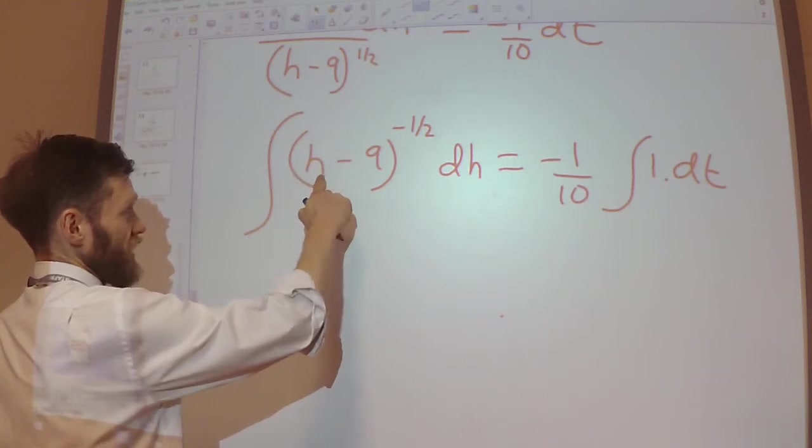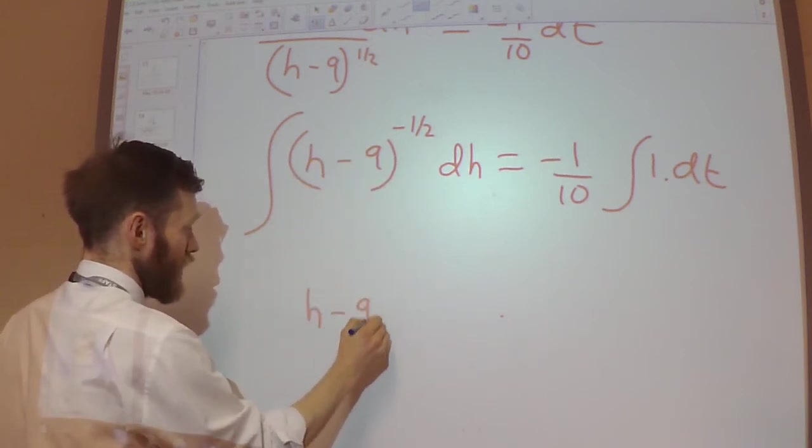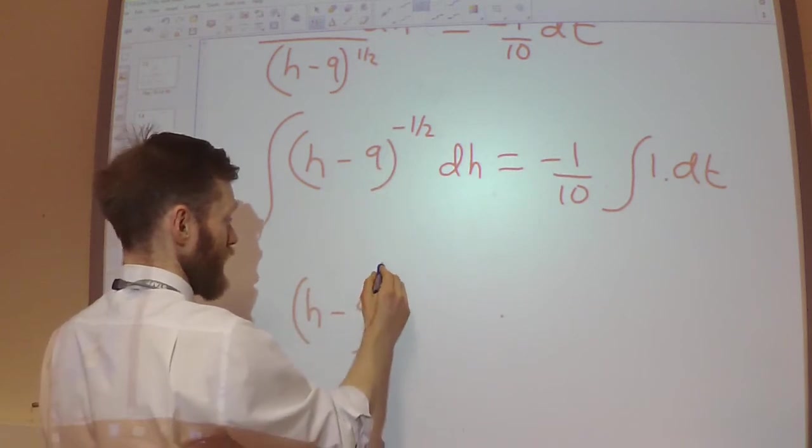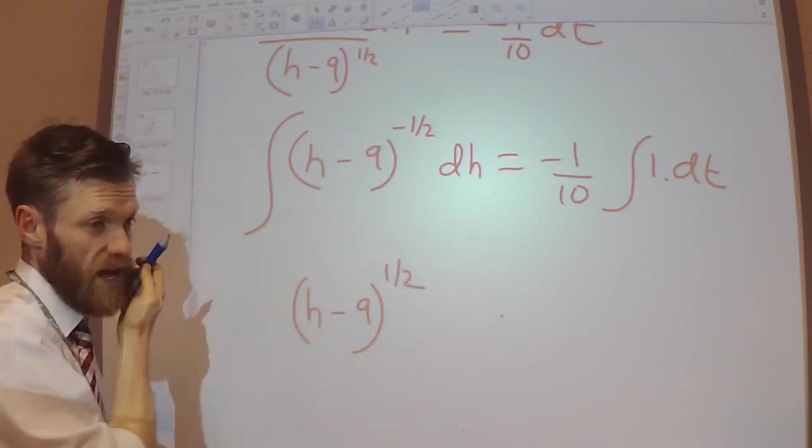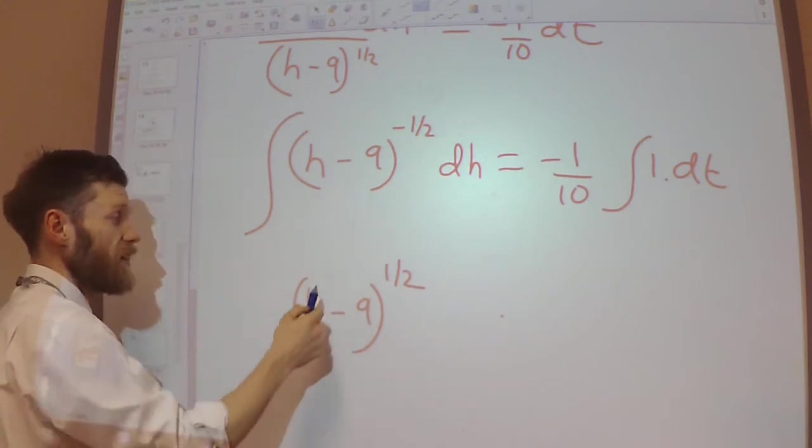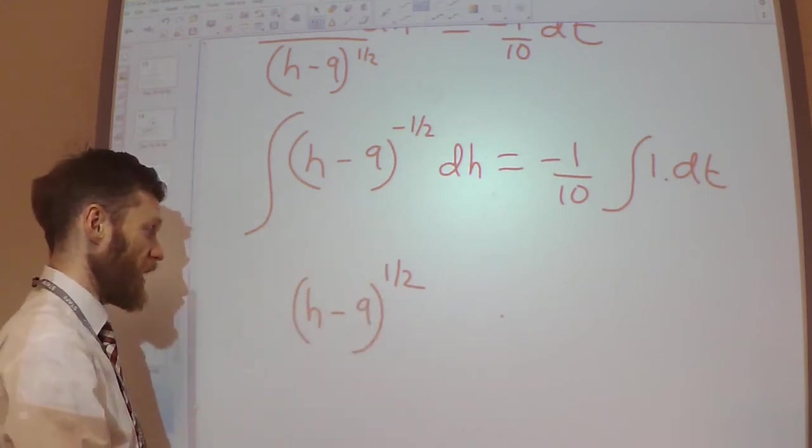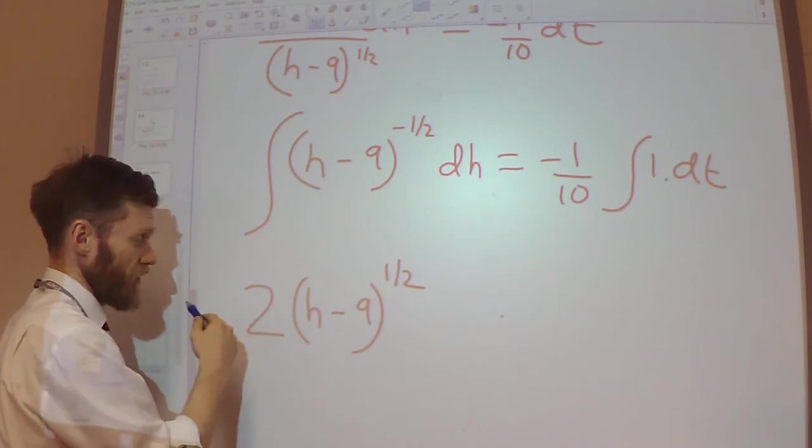So when I integrate this, the power plus 1 to the power, so that's now going to be plus 1 half, because minus 1 half plus 1 is a half. Divided by the new power, so dividing by a half is the same thing as timesing by 2.